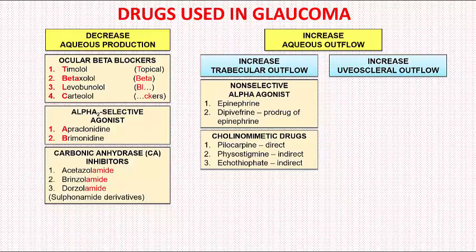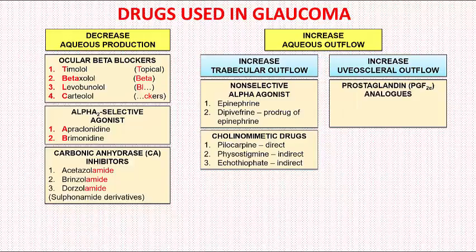Physostigmine and ecothiopate are indirect-acting drugs, meaning they do not directly stimulate cholinergic receptors but increase the concentration of acetylcholine by inhibiting the enzyme acetylcholinesterase. Lastly, in drugs increasing uveoscleral outflow, there is only one class: prostaglandin PGF2-alpha analogues. The drugs available in this class are latanoprost, bimatoprost, and tafluprost. Since they are prostaglandin analogues, their names end with the letters 'prost'.